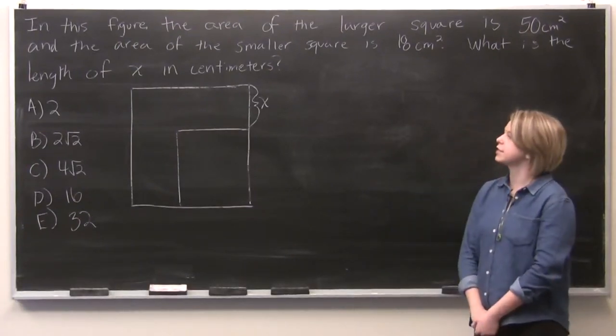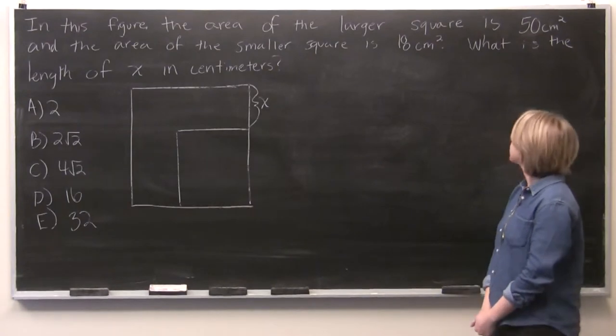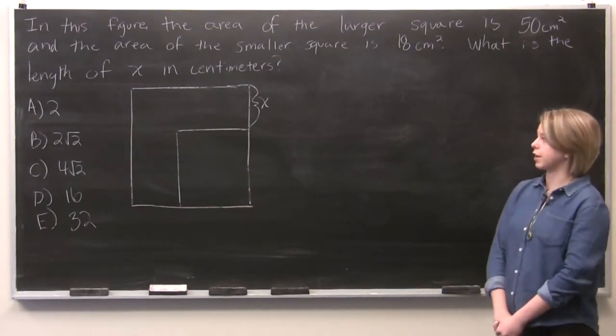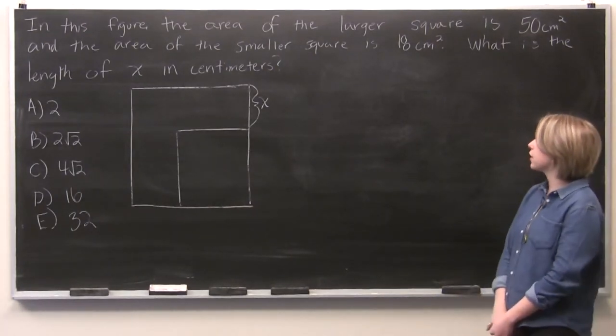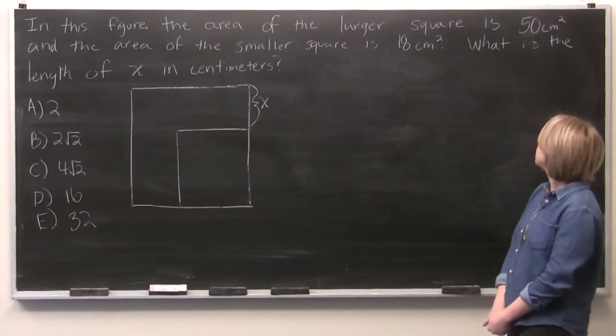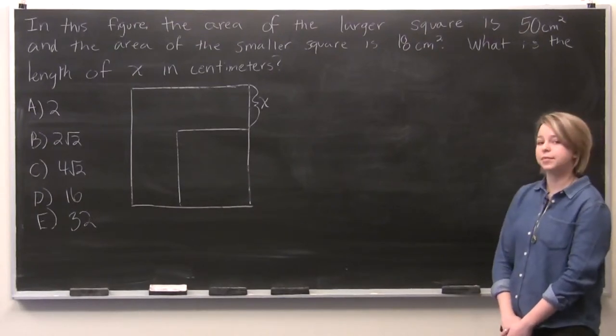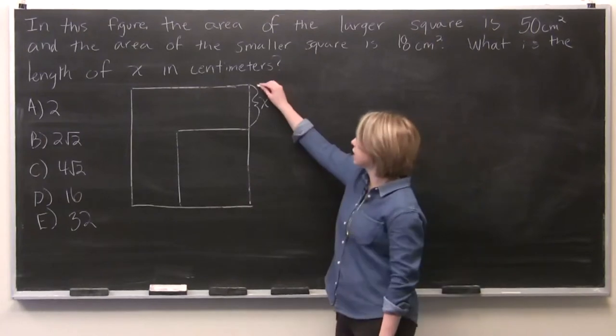So our question here reads, in this figure, the area of the larger square is 50 centimeters squared, and the area of the smaller square is 18 centimeters squared. What is the length of x in centimeters? And so our x is this little piece here.